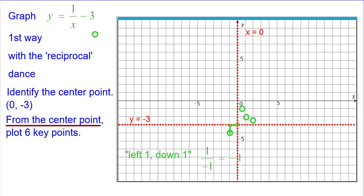Going down into the so-called new third quadrant. Left 1 down 1 because the reciprocal of negative 1 is negative 1. Left 2 down 1 half because the reciprocal of negative 2 is negative 1 half. And left 1 half down 2, the reciprocal of negative 1 half is negative 2.